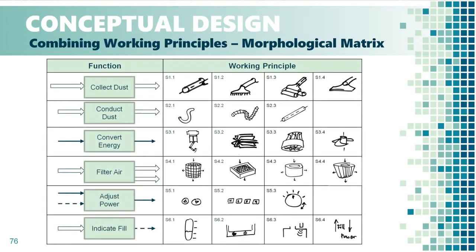Establishing working structures is not an easy task, not only because of the technical and economical aspects that we have just mentioned, but also due to the sheer number of all possible combinations. In the example of our vacuum cleaner, we have listed the working principles for just a couple of product sub-functions. It seems like a relatively small number of solutions, however, when calculating the product of all working principle variants, we arrive at 2,304 distinct working structure combinations.